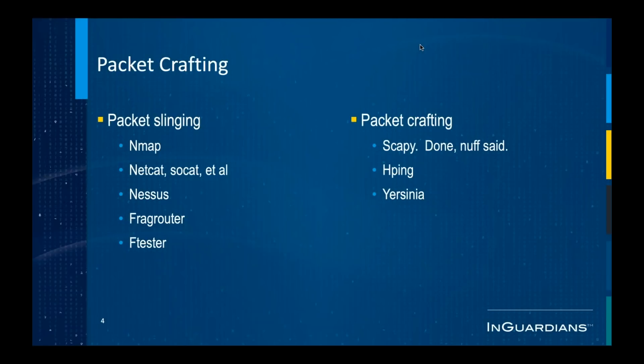Nessus also will craft packets on your behalf. FragRouter is a proxy tool that will fragment all your packets to evade intrusion detection and prevention systems. Ftester is a Perl-based suite that will read firewall rules or Snort rules and create packets designed to test those specific rules.